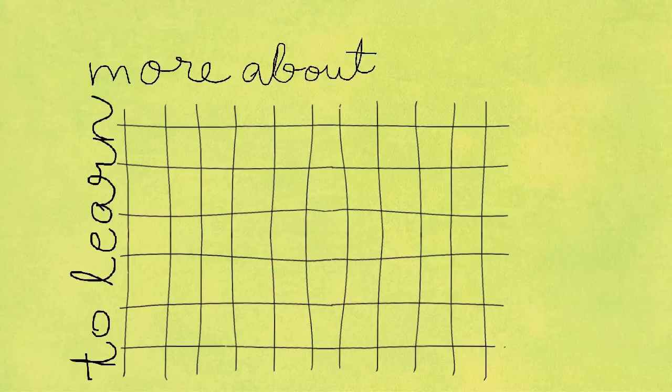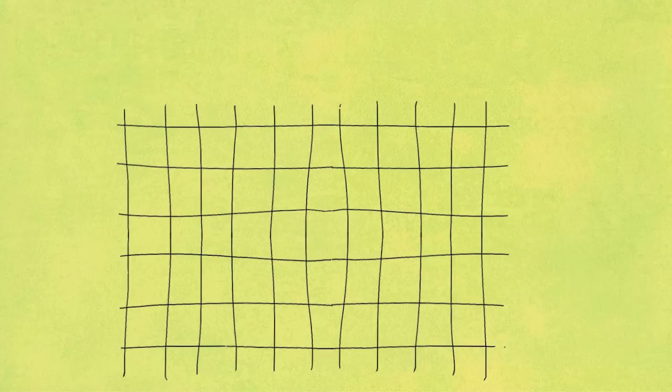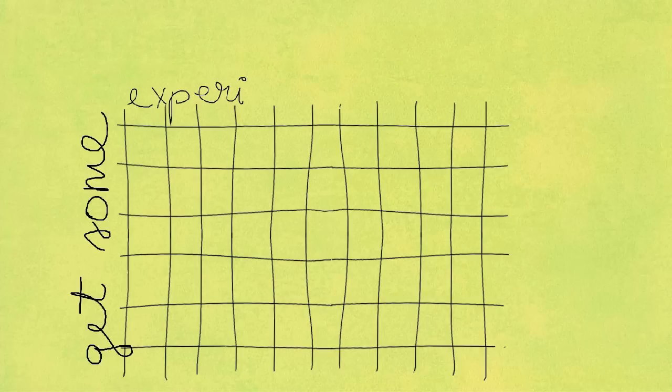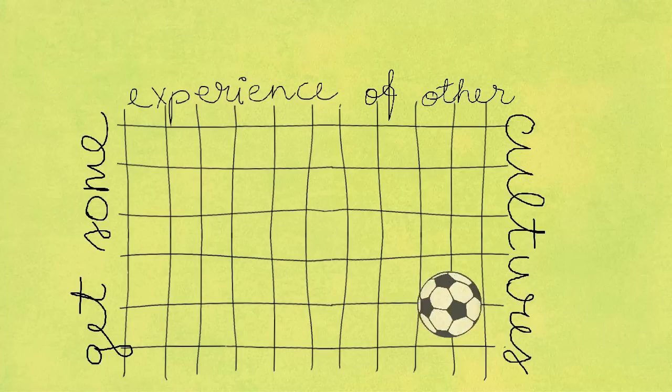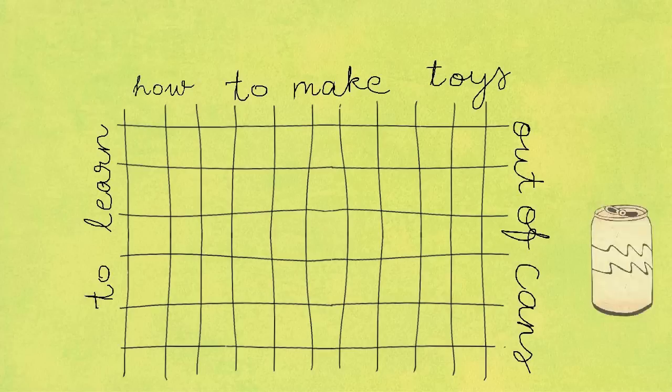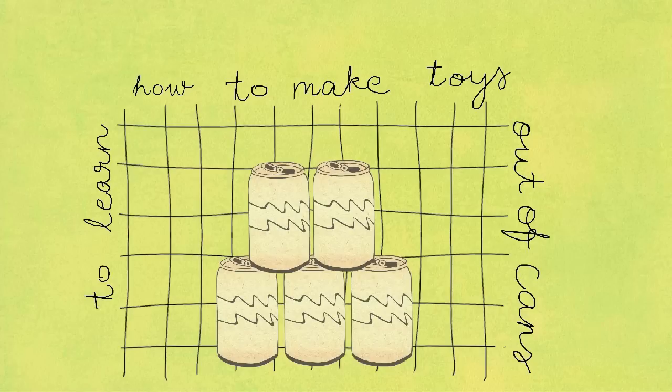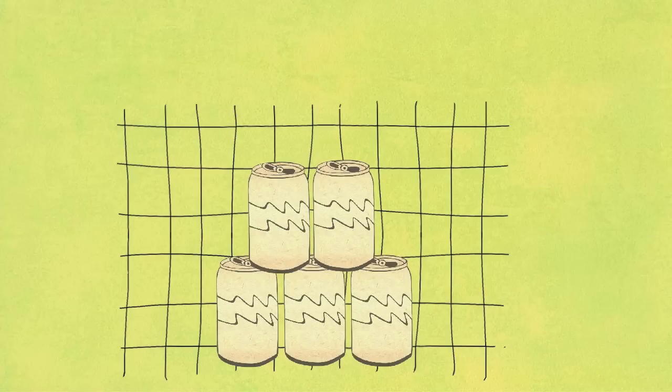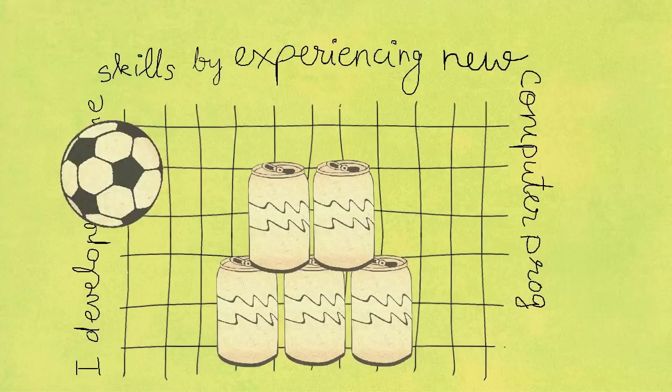I got five personal goals. One, to learn more about global warming. Two, to get some experience of other cultures. Three, unexpectedly, I learned some phrases in German. Four, to learn how to make toys out of cans. But I missed that one, because I chose another workshop. Five, to develop some new skills by experiencing computer programmes that I did not work with before.